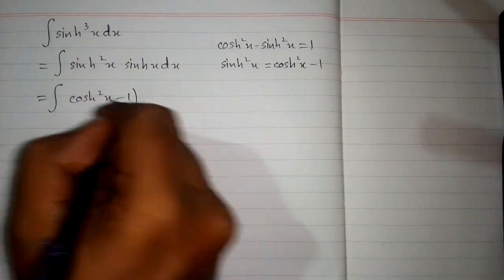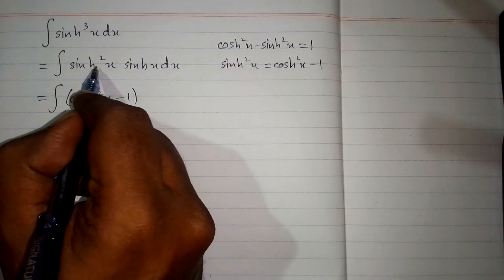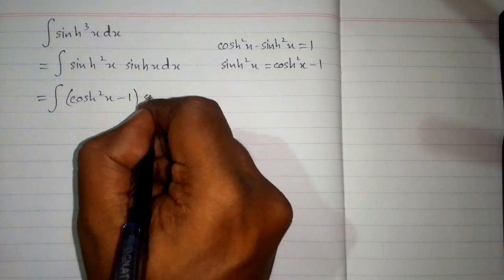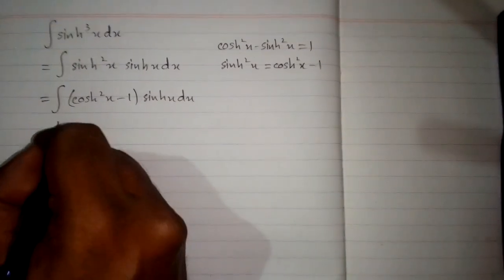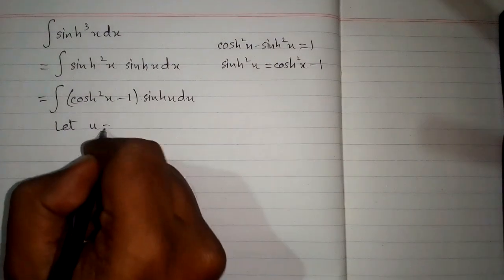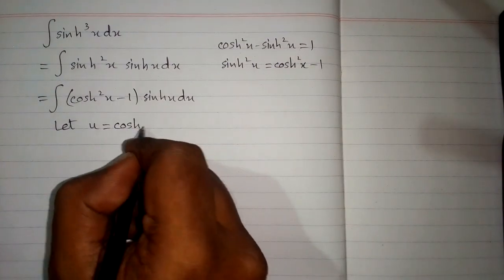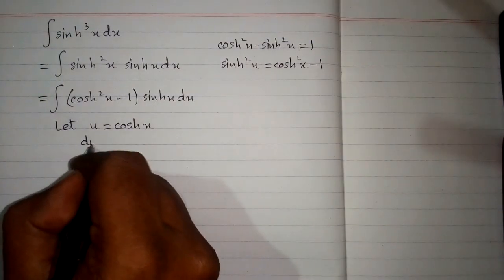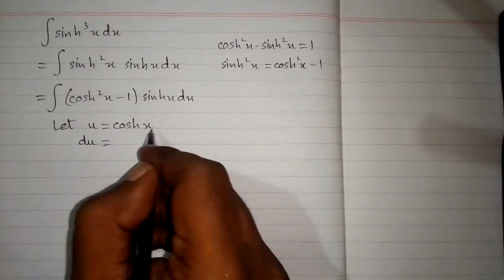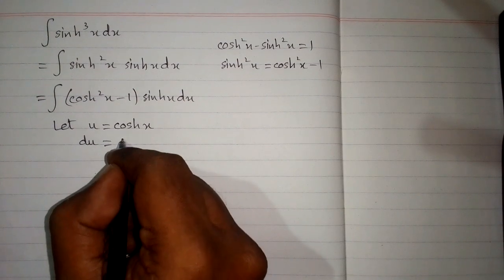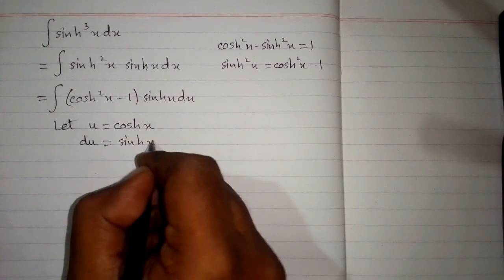Now let u equal hyperbolic cos x. So the differential du is equal to the derivative of hyperbolic cos x which is hyperbolic sin x dx.